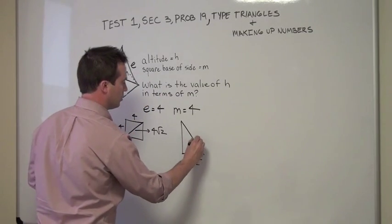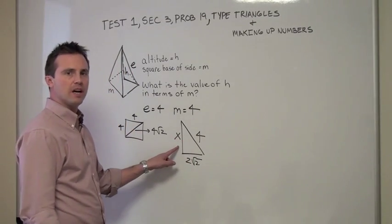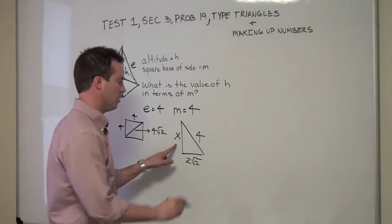We know that the edge was 4, so we put our 4 here, and now we do Pythagorean Theorem just as we did before in the algebraic solution, except we're just using numbers.